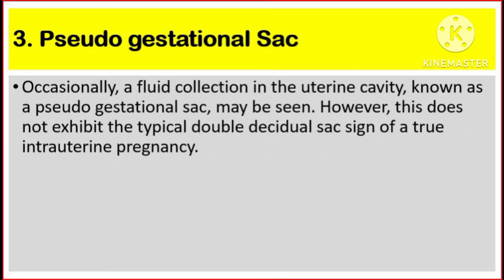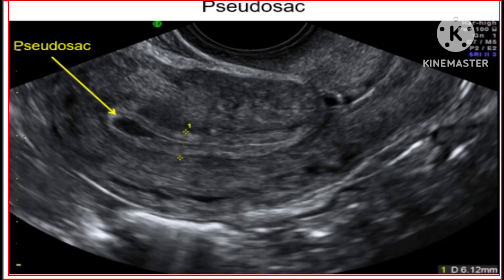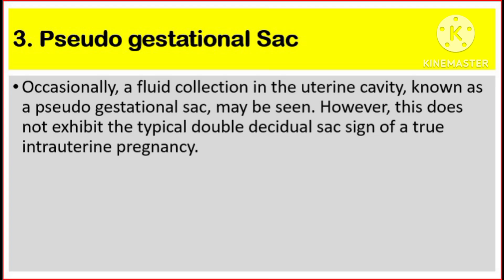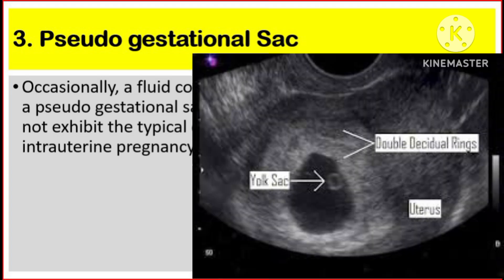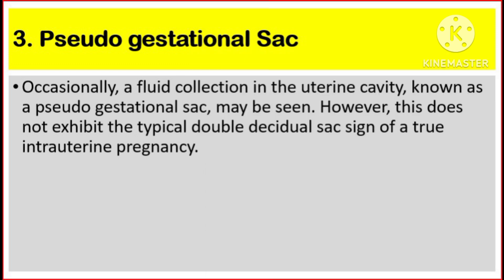Number three, pseudo-gestational sac. Occasionally, a fluid collection in the uterine cavity known as a pseudo-gestational sac may be seen. However, this doesn't exhibit the typical double decidual sac sign of a true intrauterine pregnancy.